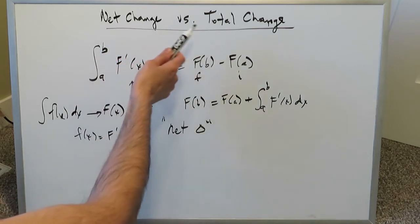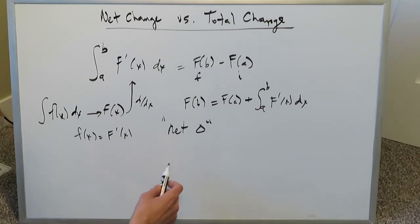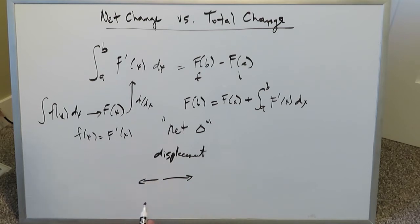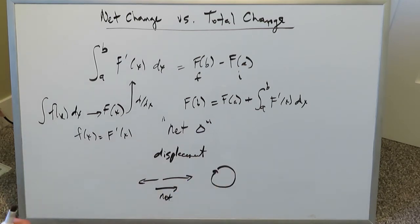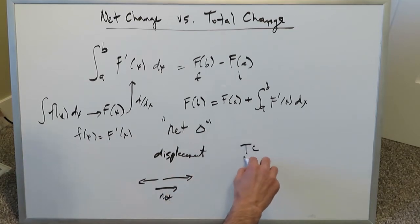In this video we're looking at the difference between net change and total change with regards to position. Net change is most easily explained in terms of displacement — the net effect. You could go several units in one direction, several in another, and where you end up is your net. Or you could go in a circle and end up exactly where you started, giving you no net movement.